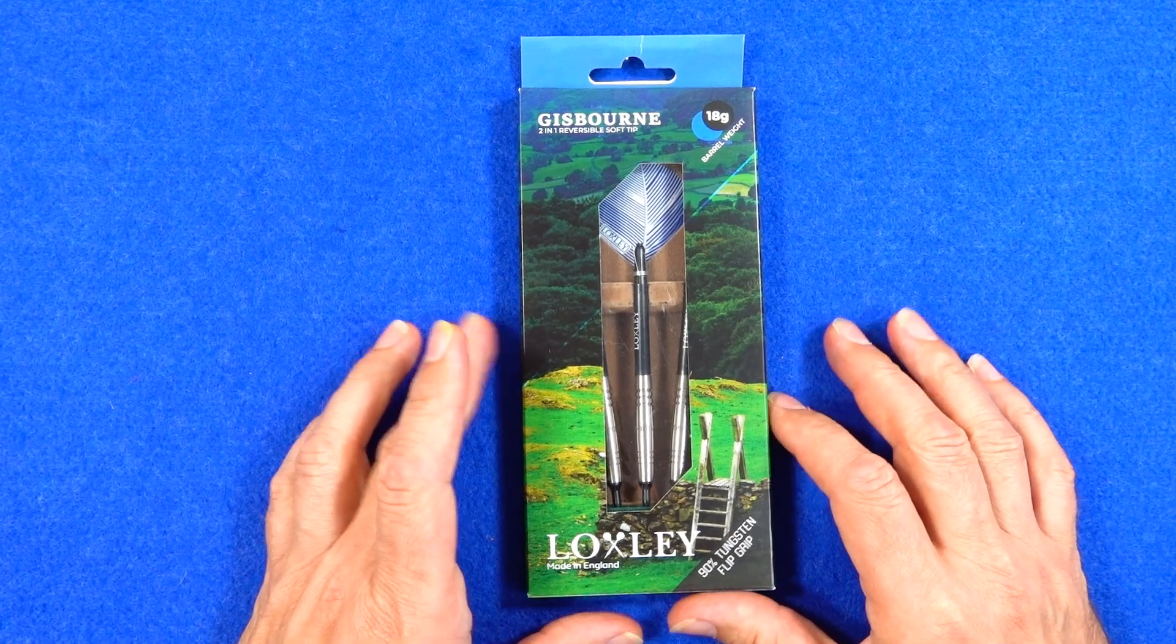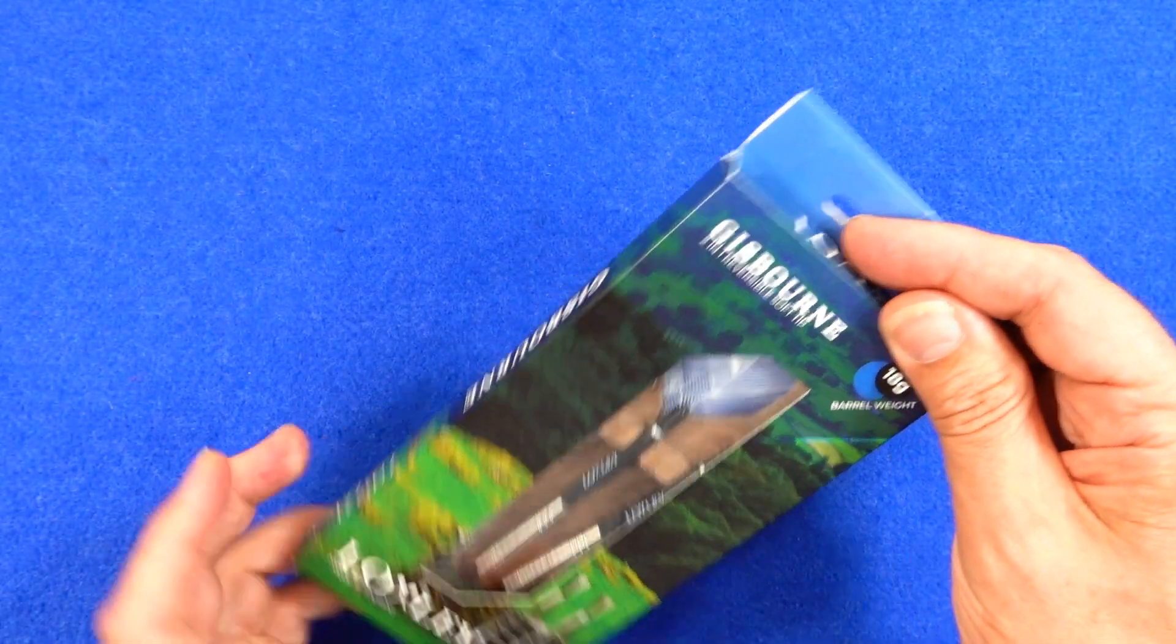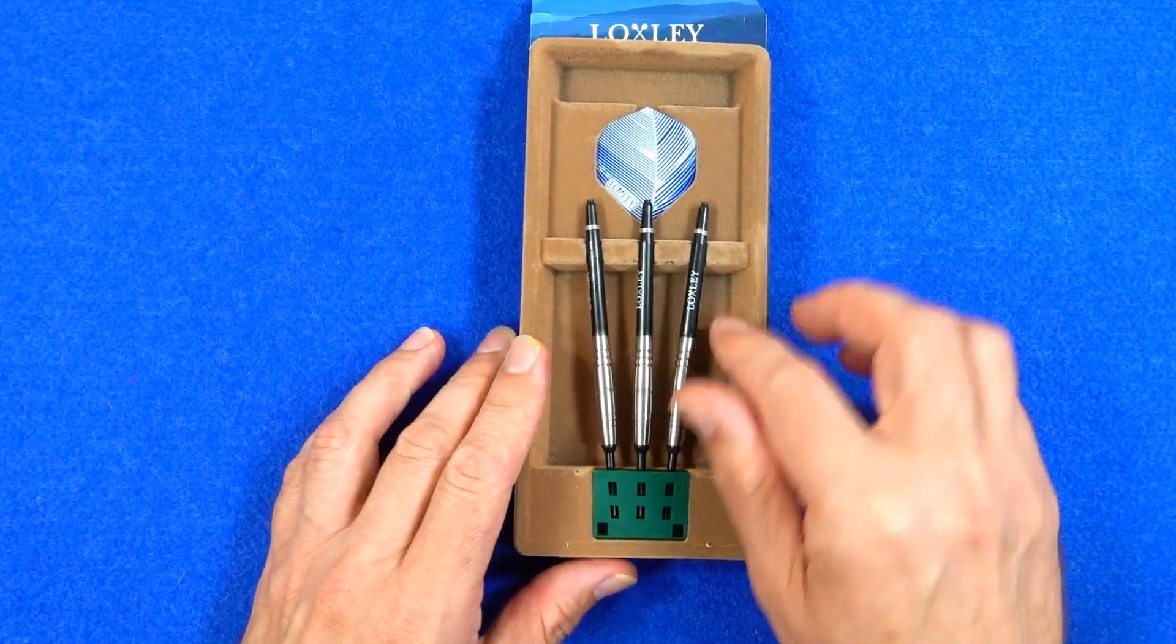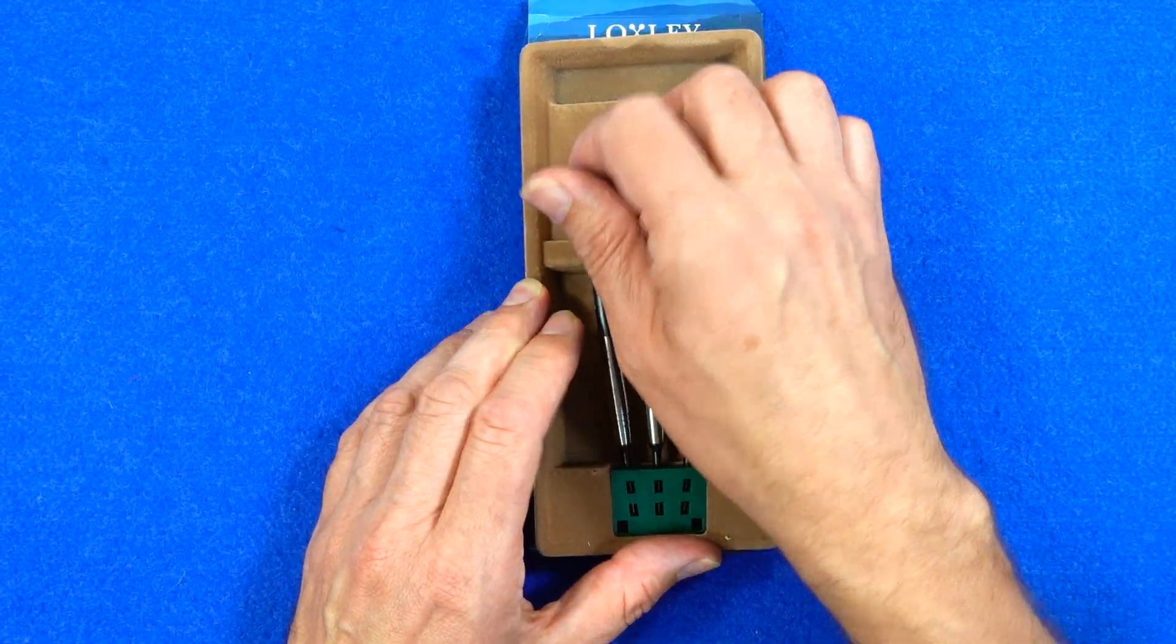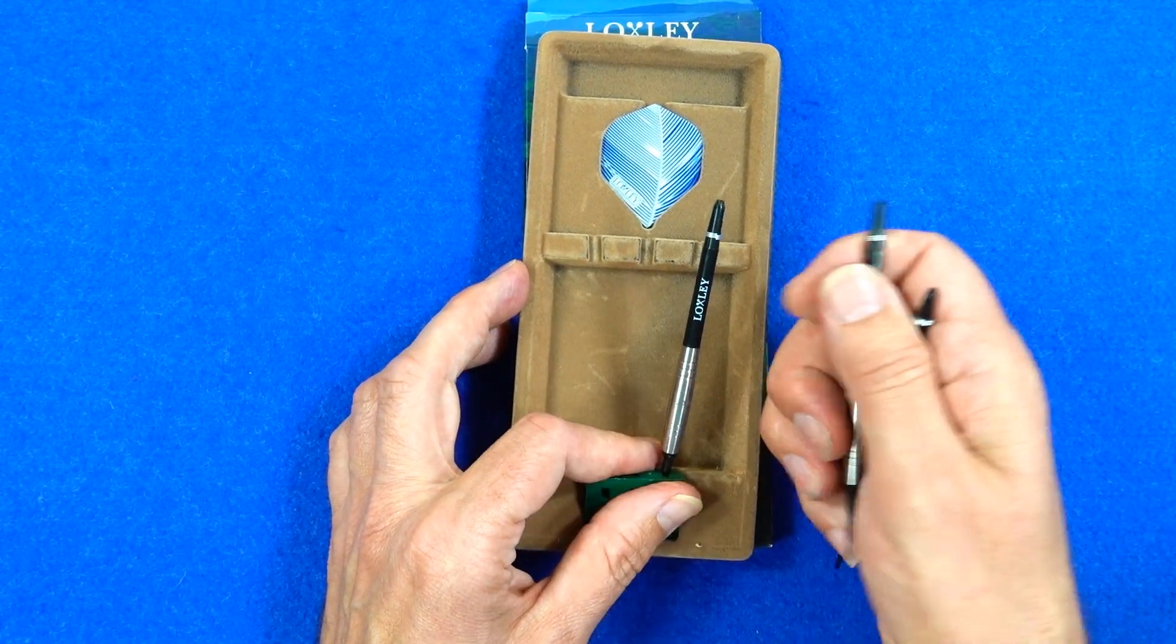So the darts come in a slimline cardboard packaging with a nice picture of the countryside. Inside you got a plastic inlay with a velvety covering and the darts fitted into a nice green point holder. Did you know green's my favourite colour?